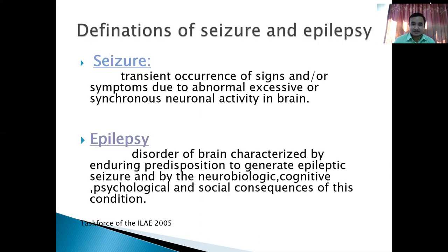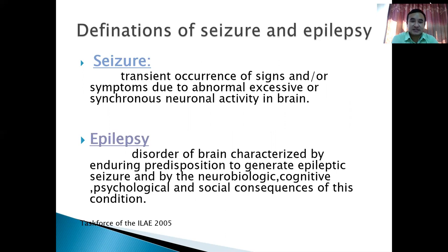So what is Caesar? Caesar is basically a transient occurrence of signs and symptoms due to the abnormal, excessive and synchronous neural activity in the brain. Basically, Caesar is a condition where there is excessive hyperactivity of the neurons of the brain.